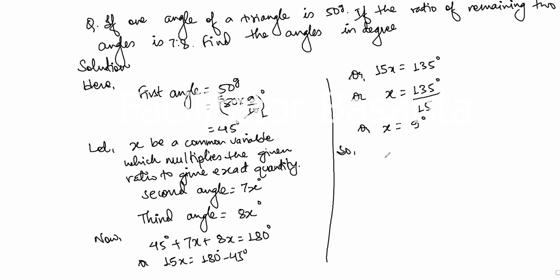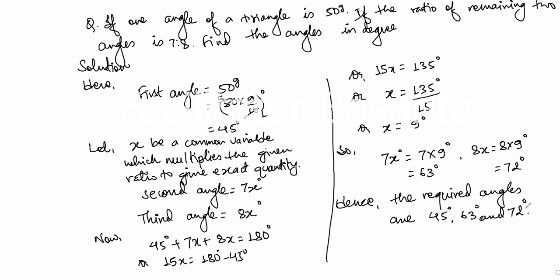So, 7x equals to 7 into 9 degree. It's 63 degree. Next one is 8x. It is 8 into 9 degree. It is 72 degree. Hence, the required angles are, first angle is 45 degree, second angle is 63 degree, and third one is 72 degree.